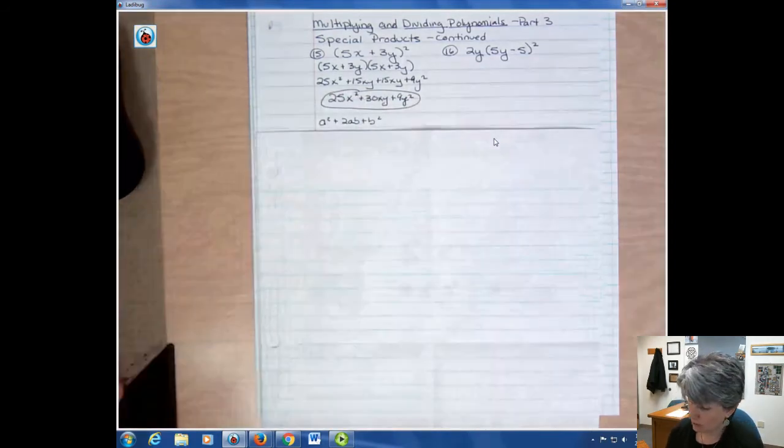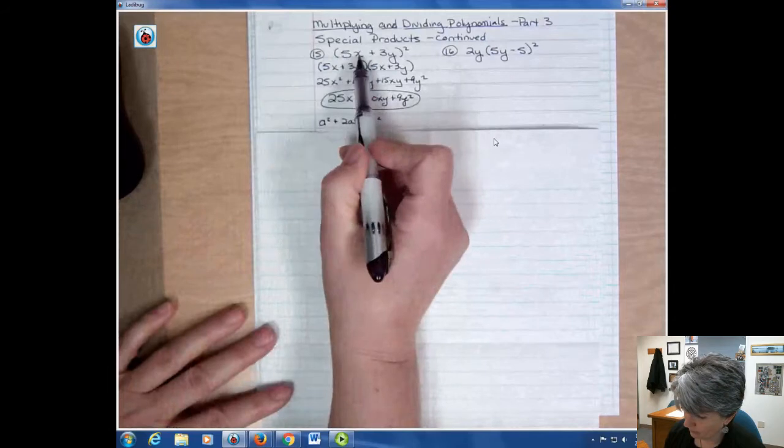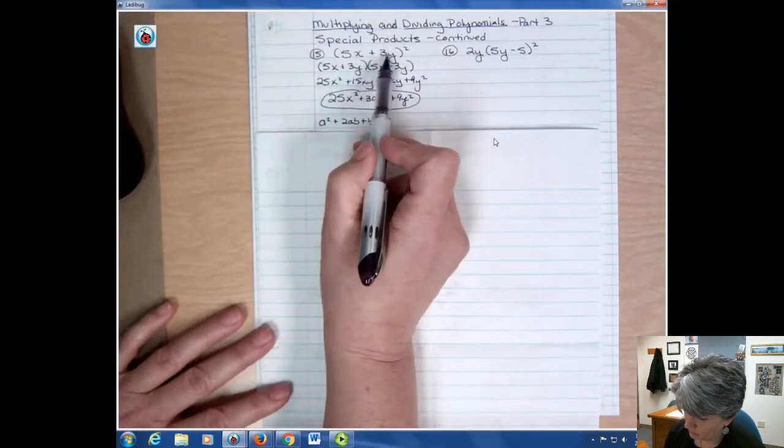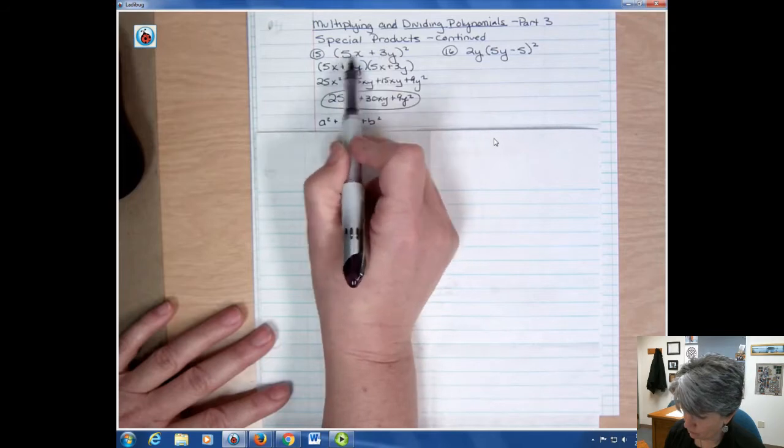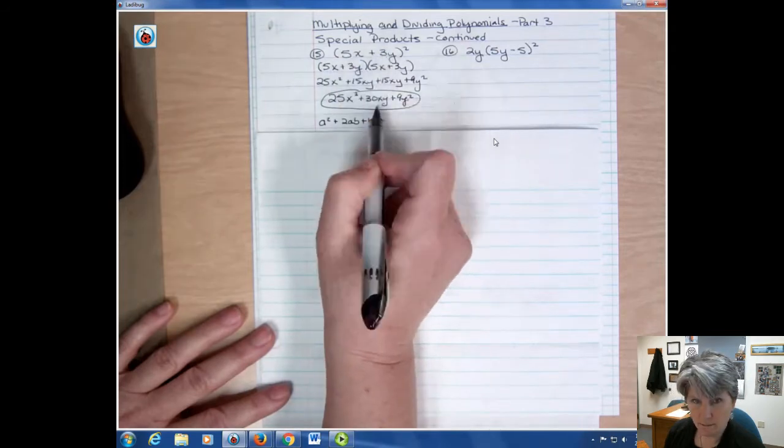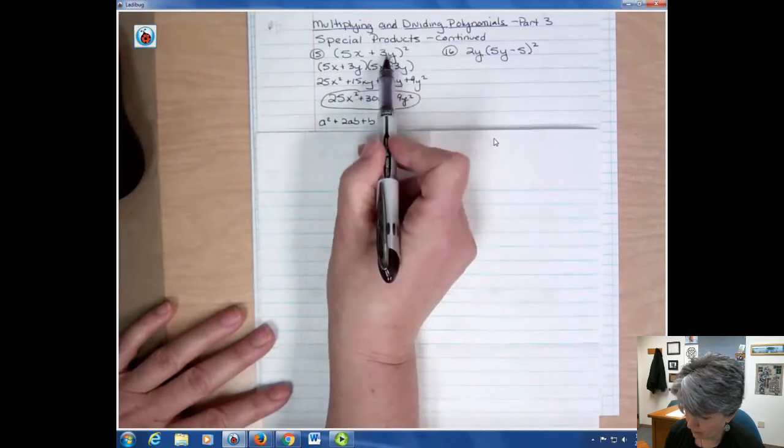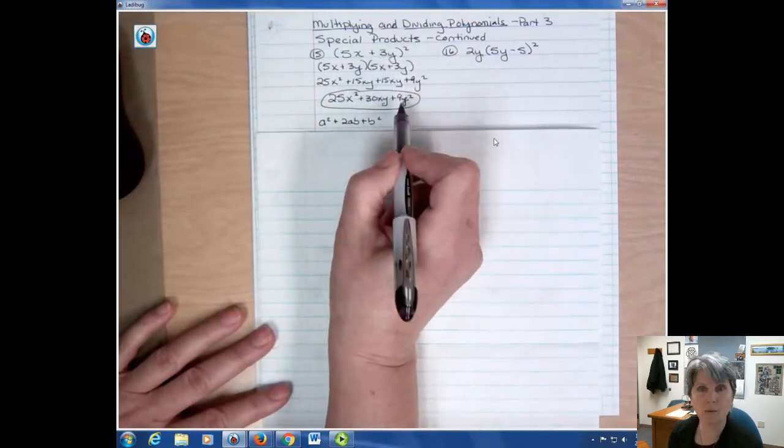And you can look at the shortcut. It would have been 5x times 5x, 25x squared. And then you multiply these two things together. That's 15xy doubled. That's 30xy. And then you multiply this times itself. 3y times 3y is 9y squared.